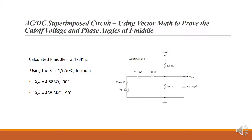So far we've made a couple of assumptions: at mid band, C1 acts like a short and C2 acts like an open; and the output at cutoff frequency is 70.7% of mid band. We're now going to use vector math to prove both of those assumptions.